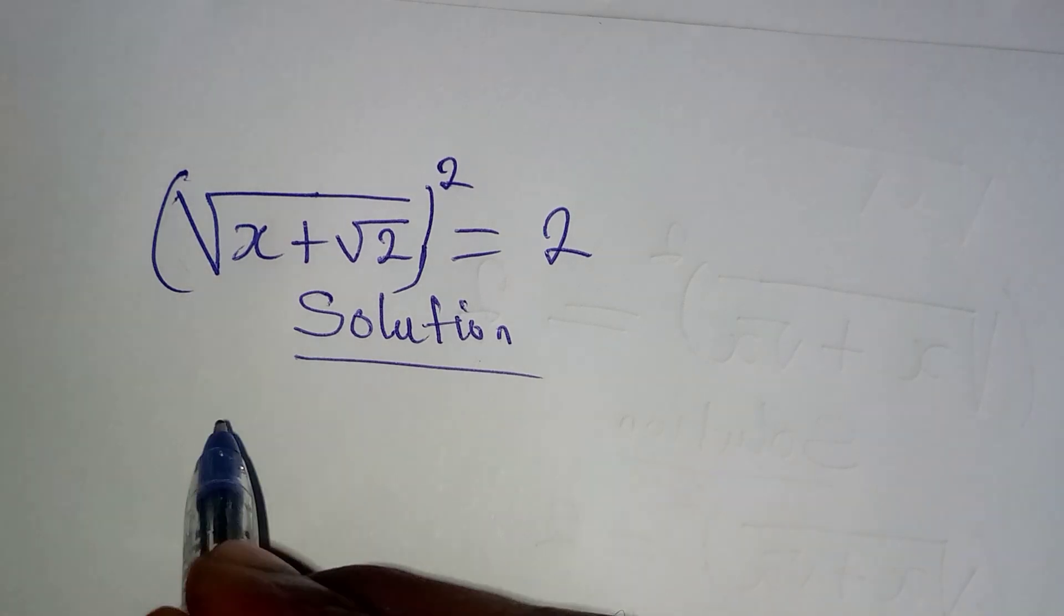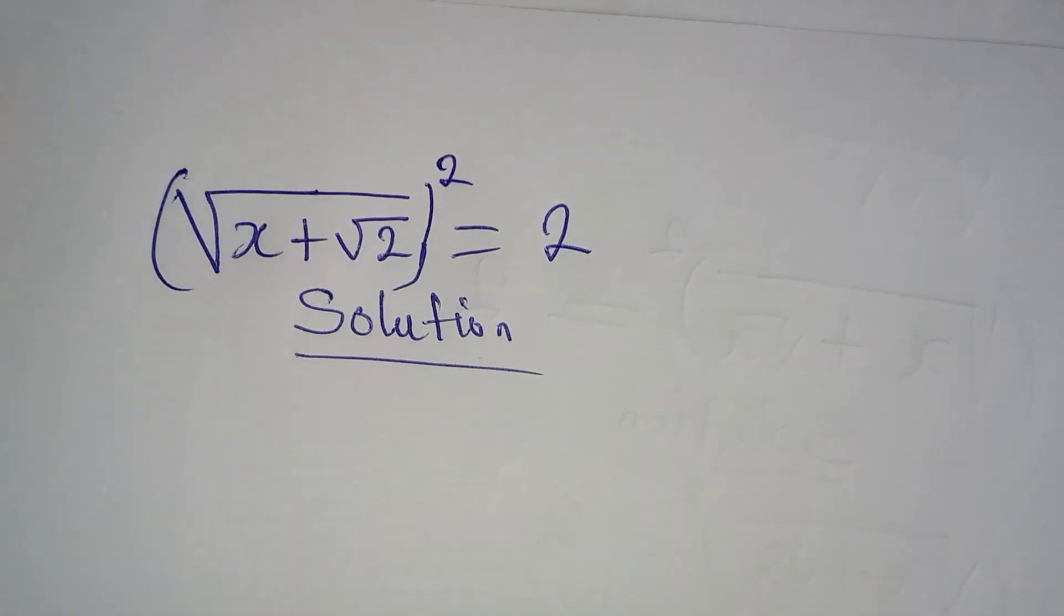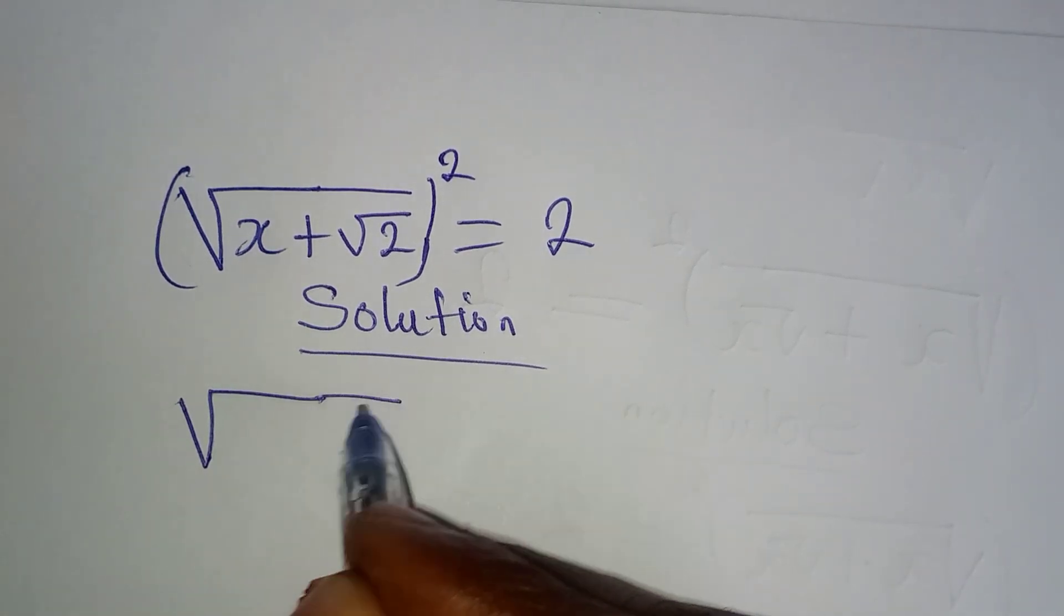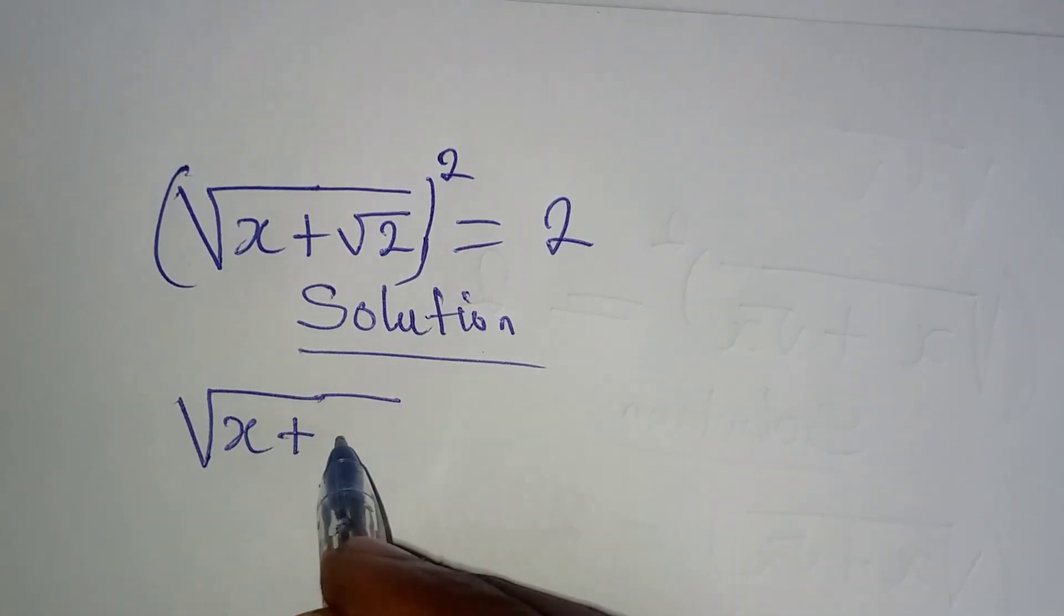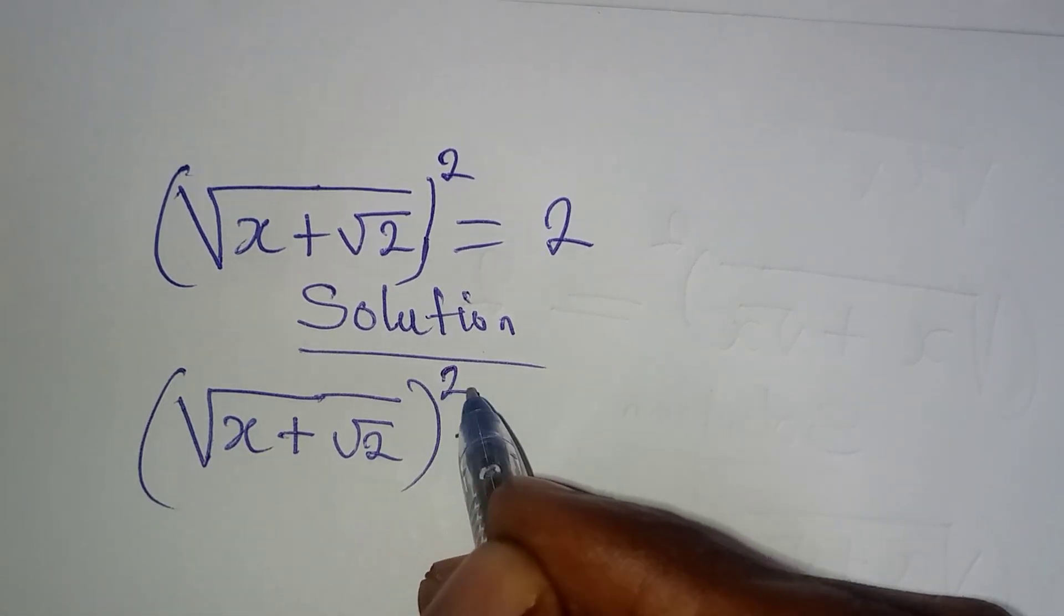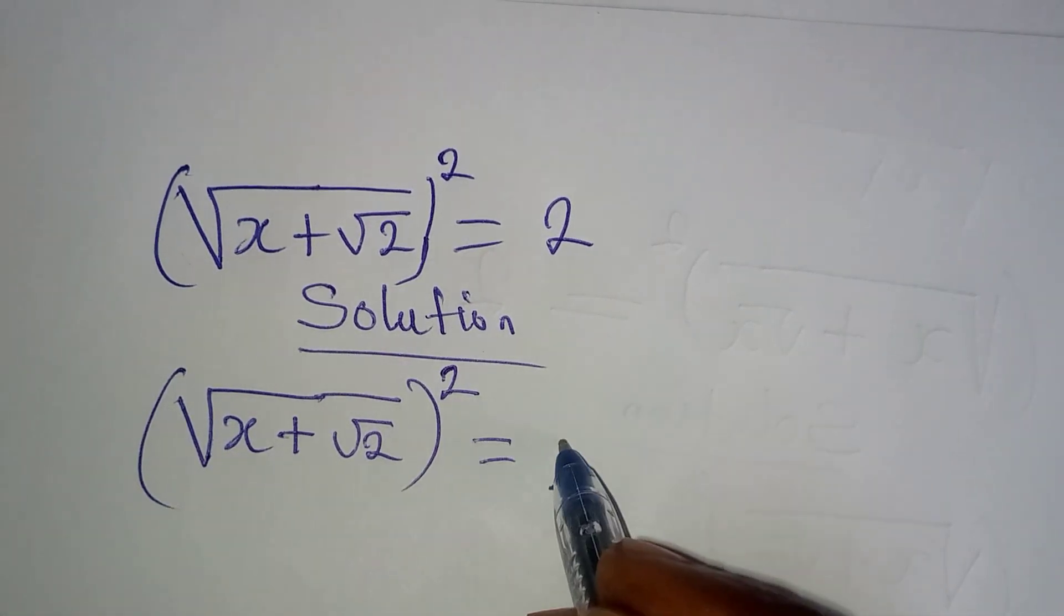Hello everyone. Let's solve this problem right away. We have square root of x plus square root of 2 to the power of 2 equal to 2.